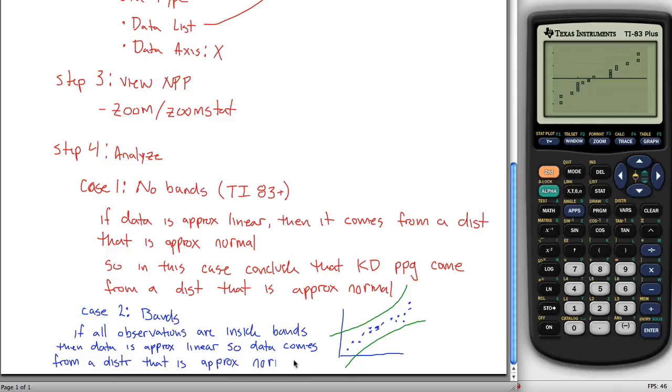Basically what happens with these is if you're making them yourself, all the TI can give us is something like this. It won't include the bands for you. So it's kind of subjective. You have to make a judgment call. But a lot of statistical software will put the bands in here, and you can create the bands by telling it how sure you need to be of your conclusion. In our class, either you'll be given the bands or you'll create your own. If you create your own, it's just a ballpark, a subjective call. If you're given one that has bands in it, you look at the bands and say if all the dots are inside the bands, my data is approximately linear. If there's a dot outside of the bands, my data is not linear. And if your data in this normal probability plot is linear, then it comes from a distribution that's approximately normal. If it's not linear, then it doesn't come from a distribution that's approximately normal.